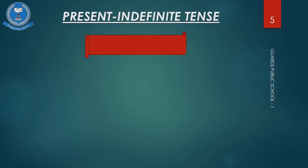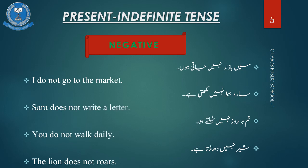Let's move to the negative sentences. Only 'do not' and 'does not' will be added to the negative sentences. For example: I do not go to the market. Sarah does not write a letter.